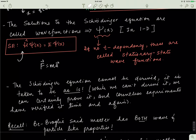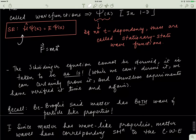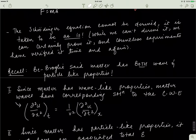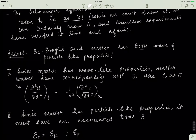Matter takes on one or the other behavior depending on what experimental conditions and restrictions we impose on it. Since matter behaves like a wave, we can say that matter waves have a corresponding solution to the classical wave equation — a partial differential equation. We did a whole video series on the classical wave equation, so I recommend watching those videos. Since matter also has particle-like properties, it must have an associated total energy composed of kinetic energy and a potential energy term.